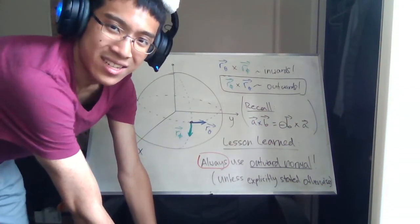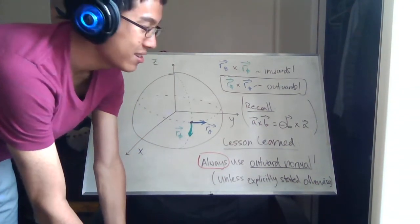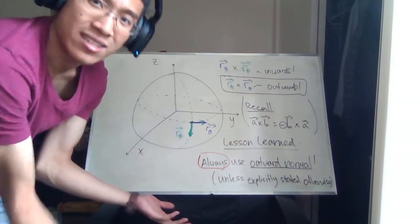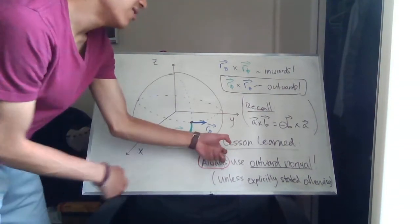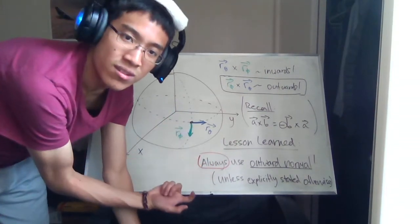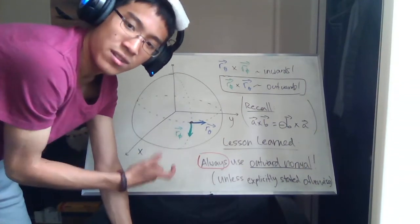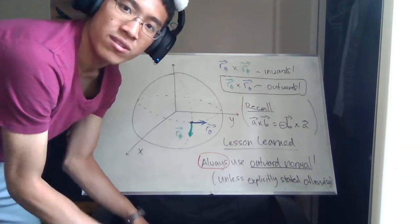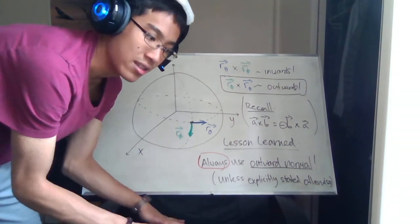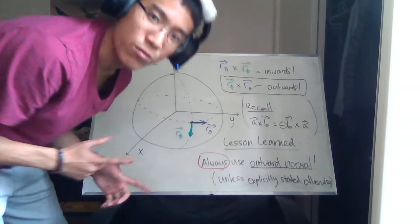That's why there's a negative sign missing from my answer. That way it makes it consistent with the books. Lesson learned is to always use the outward normal, not the inwards. Make sure that with all your computations we use the outward normal. When we want to compute f.ds, the normal is outwards.